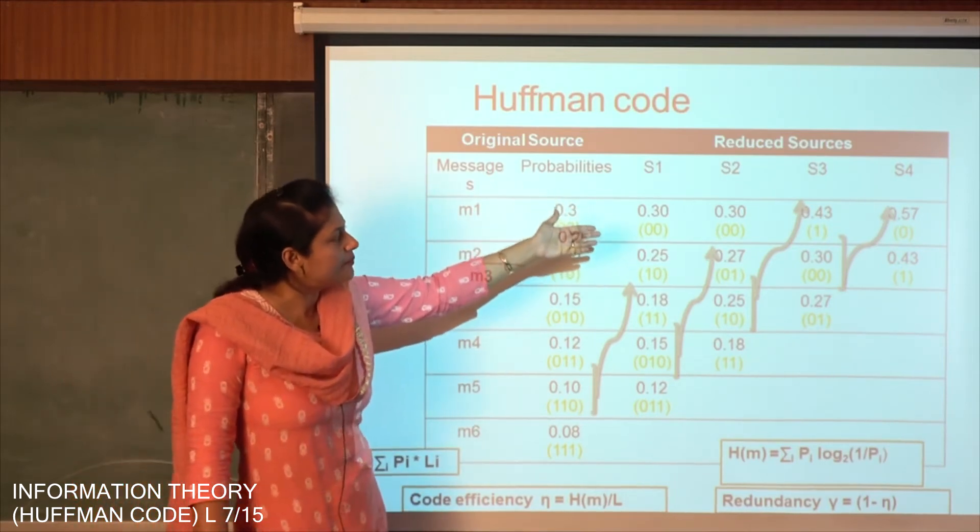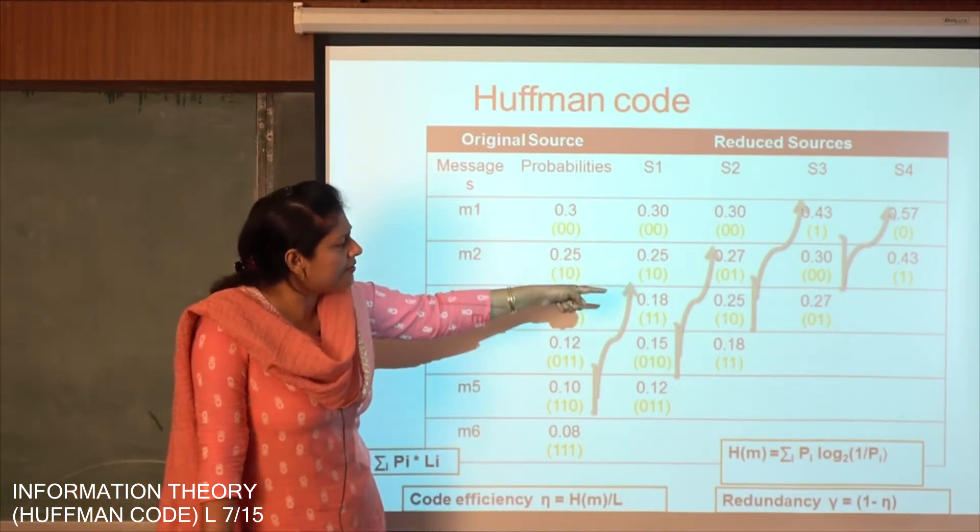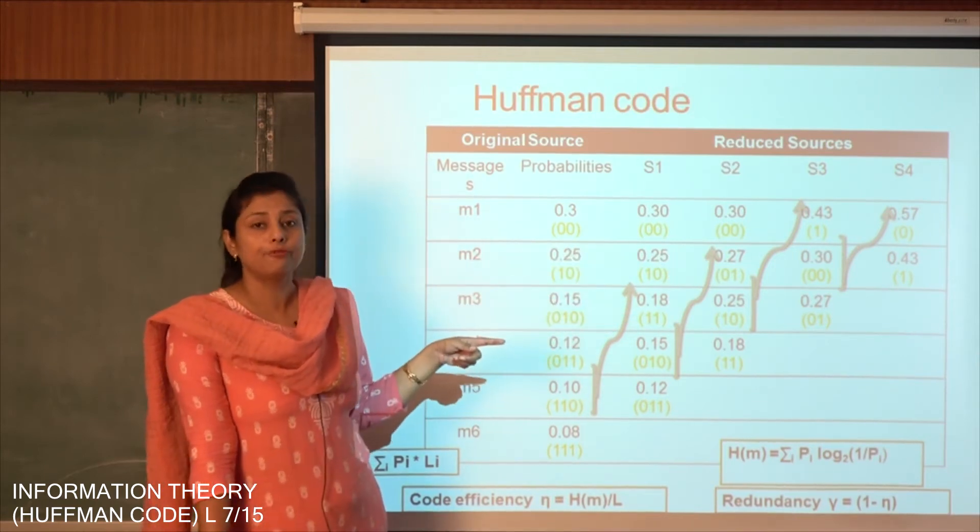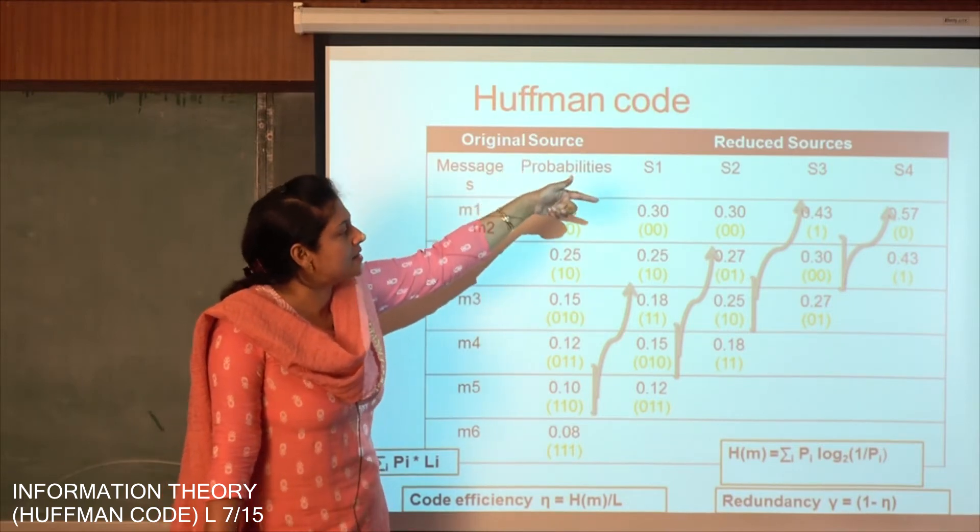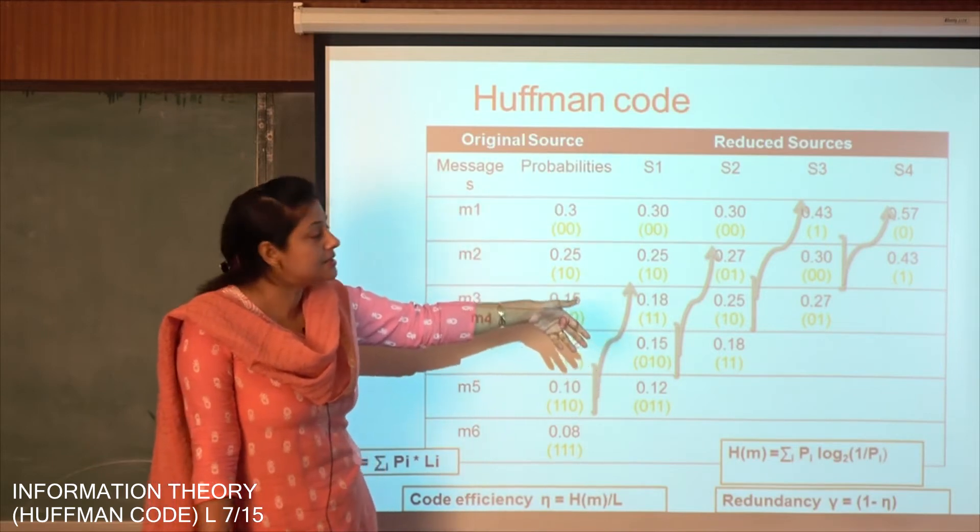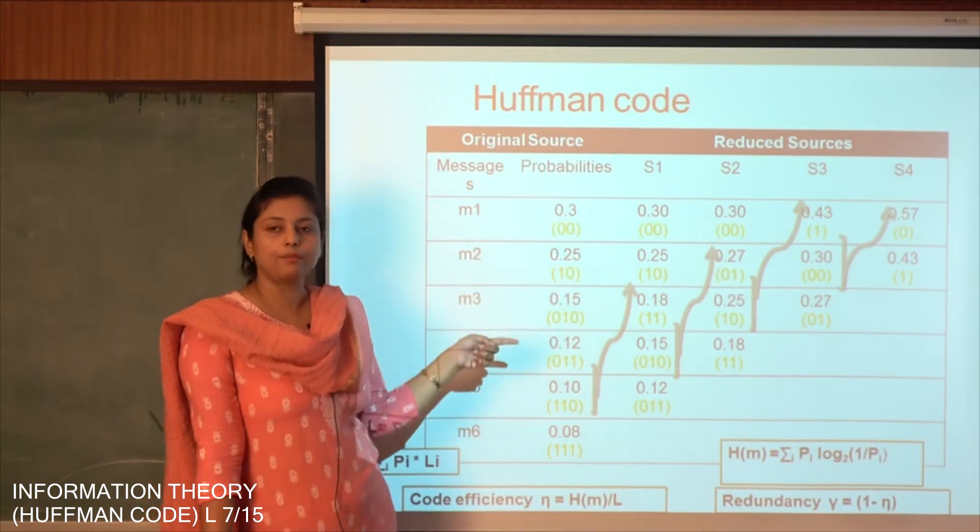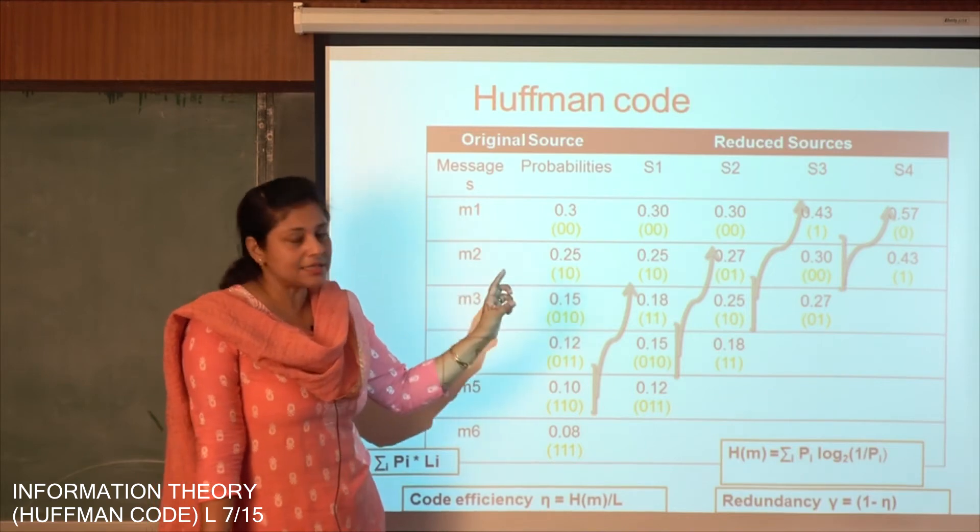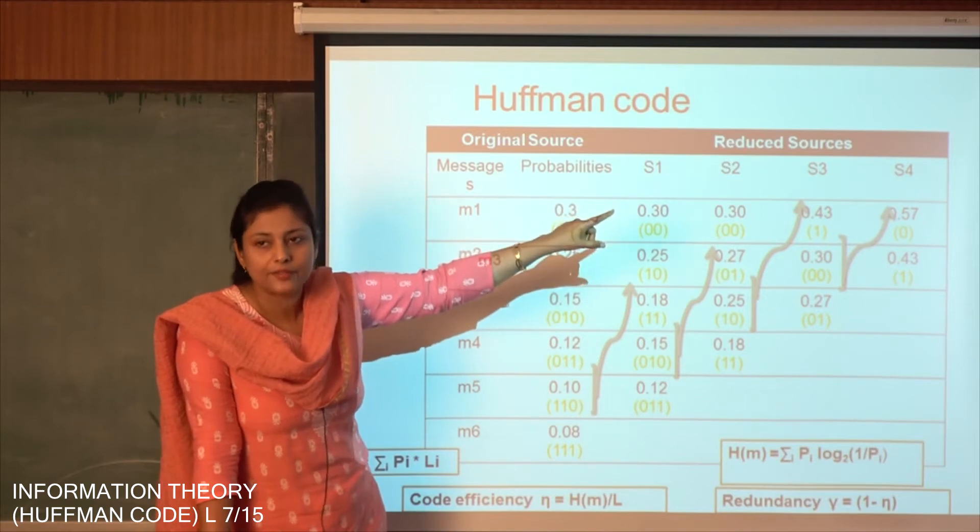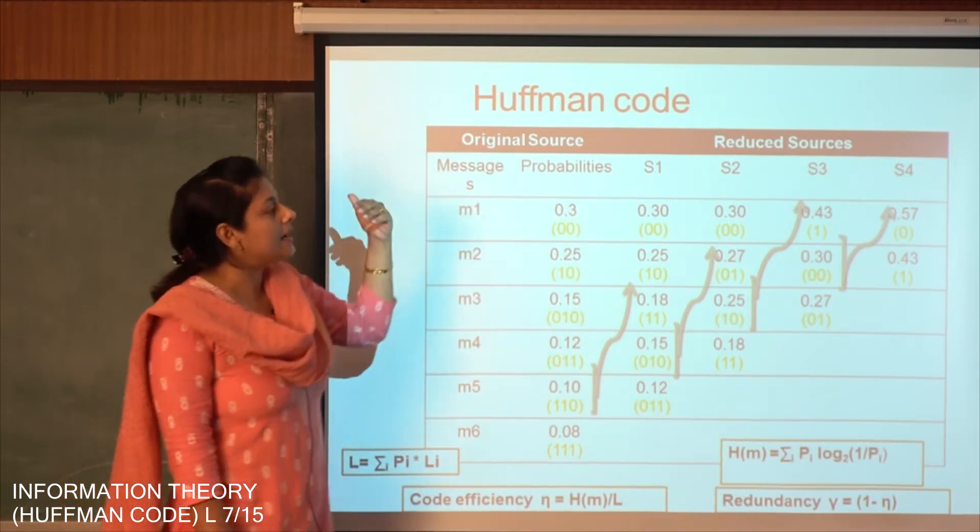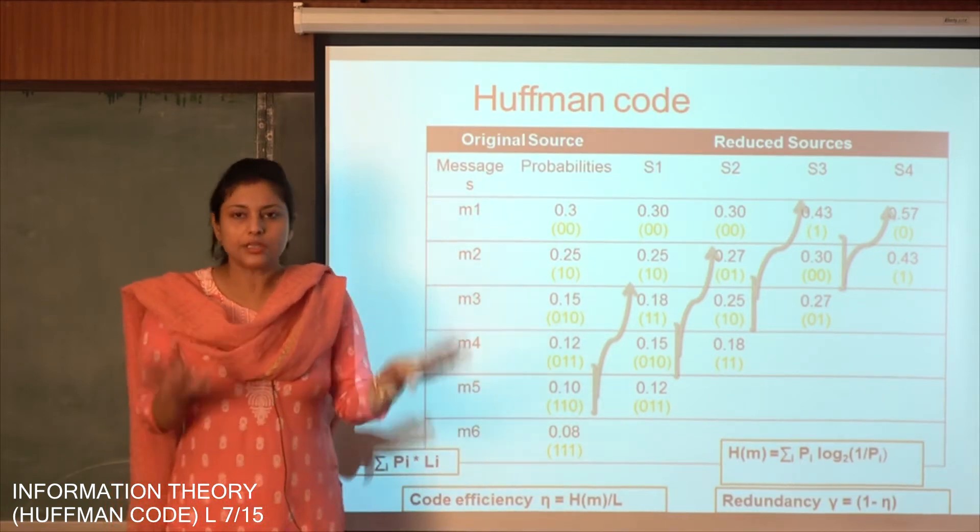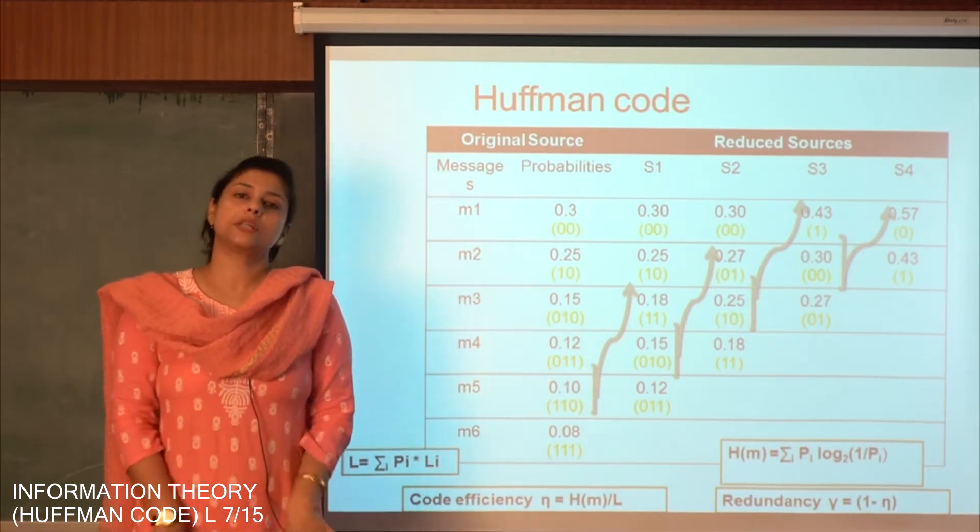So let us look at the third one S3. Here we are adding the last two, that is 0.25 and 0.18. We are getting 0.43. So 0.43 in the last stage goes above 0.3. So we rearrange it as 0.43, 0.3 and 0.27. The last stage we have to add the two, 0.3 and 0.27. The result is 0.57. So at the last reduced state we have 0.57 above and 0.43 below. So now this is arranged. Now we have to start encoding it.